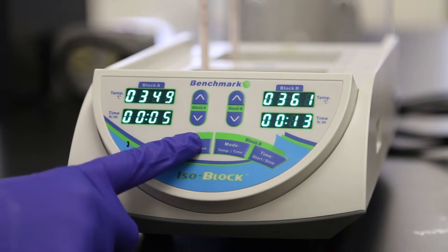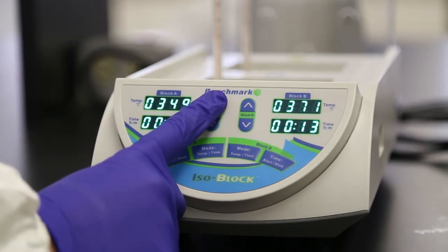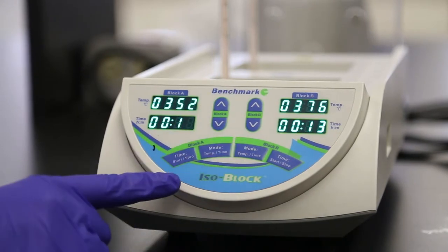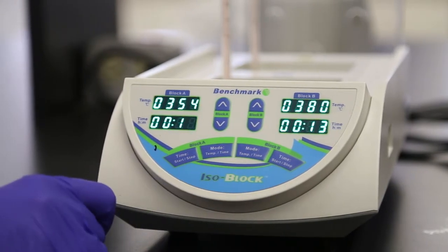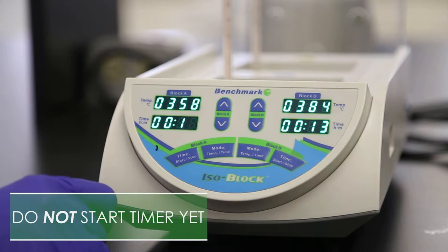To use the built-in timer, press Mode, Temp, Time for Block A twice to select the time setting for Block A. The last digit of the selected setting will flash. Note, the display includes hours and minutes. Using the Block A arrow keys, press and hold the up or down to set the timer to 10 minutes. Don't start the timer yet.